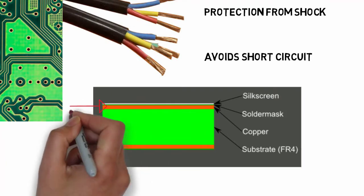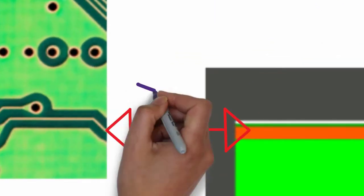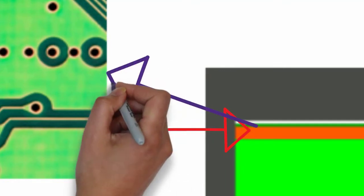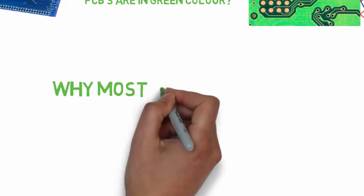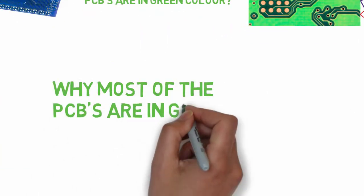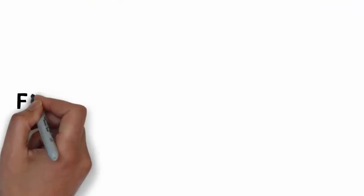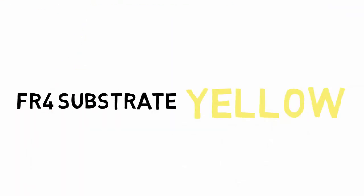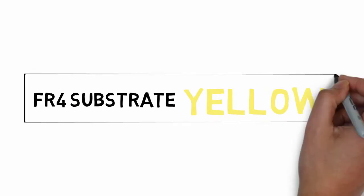The solder mask is green in color. But if you have a solder mask of any other color, there is a dull yellow color underneath. Solder mask can be different colors.